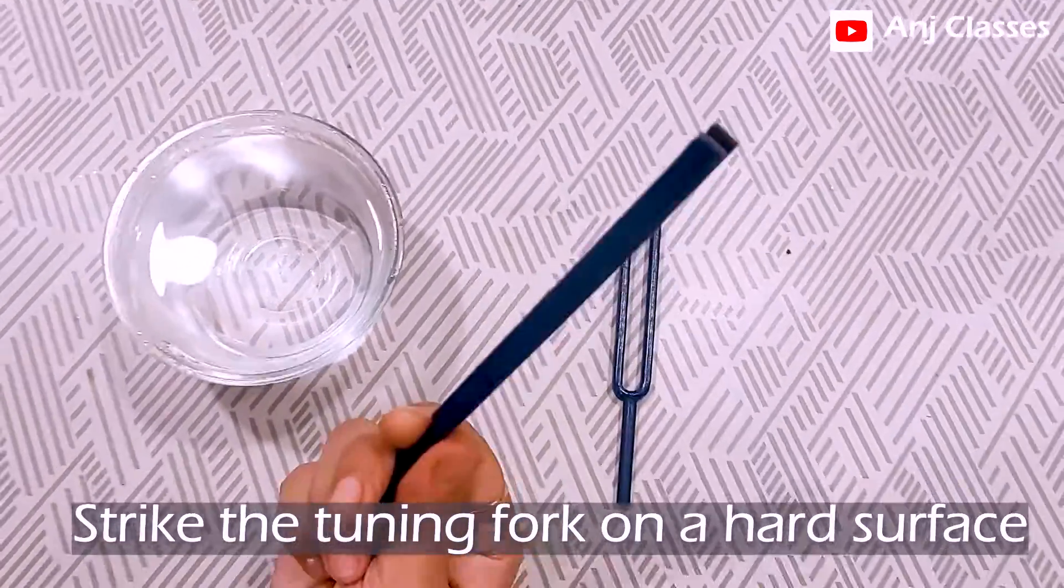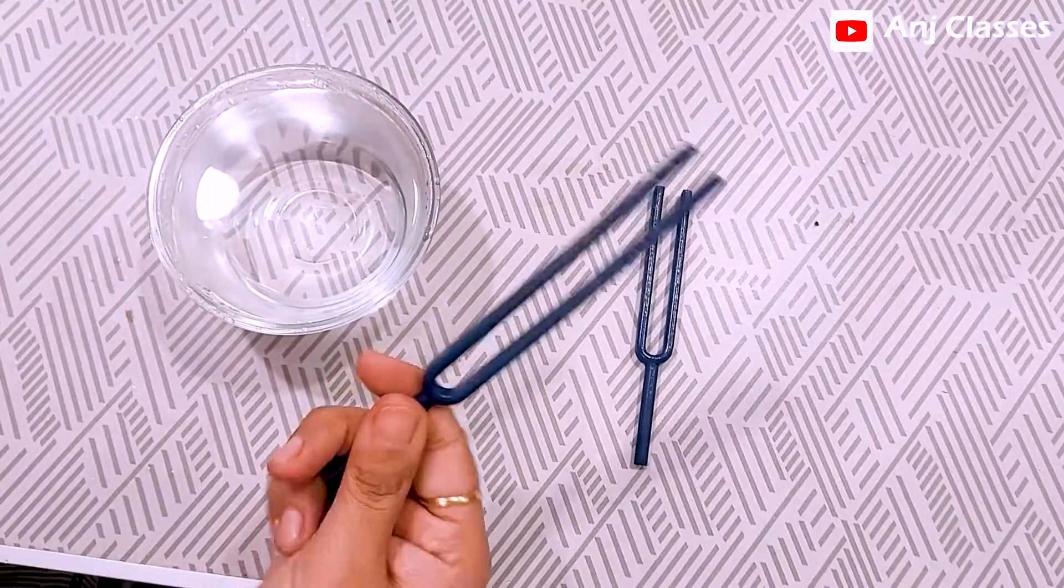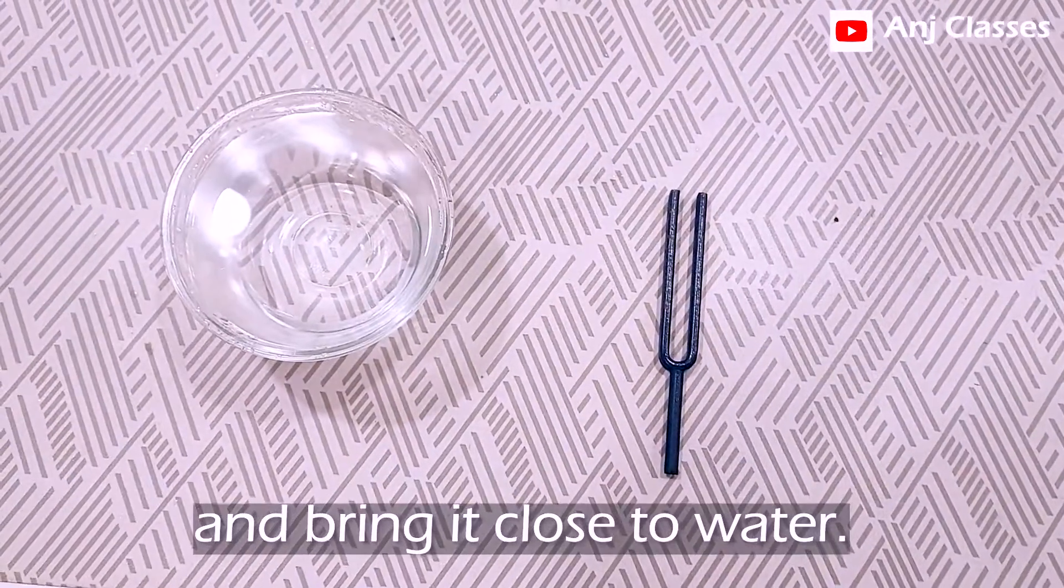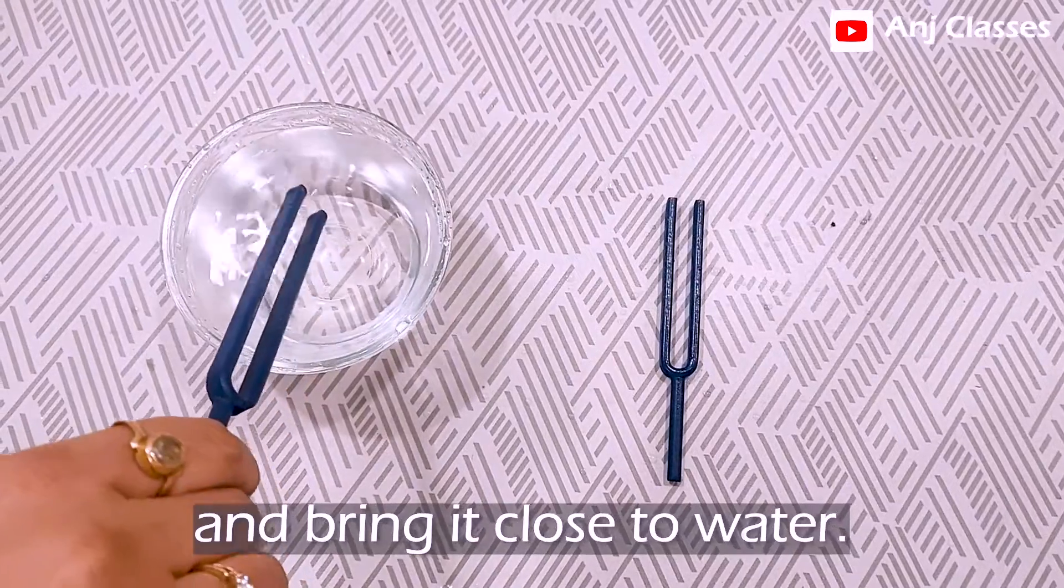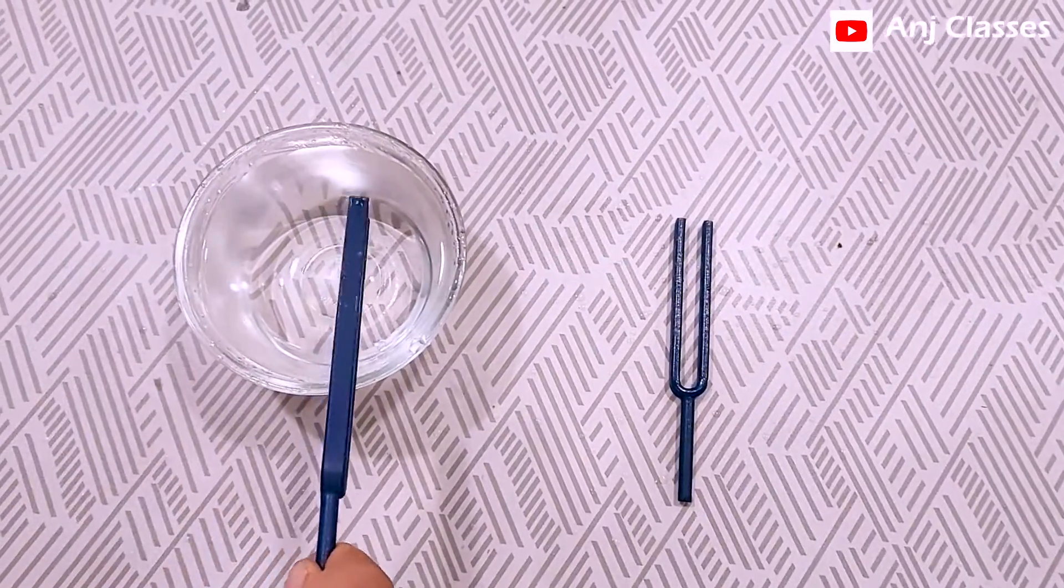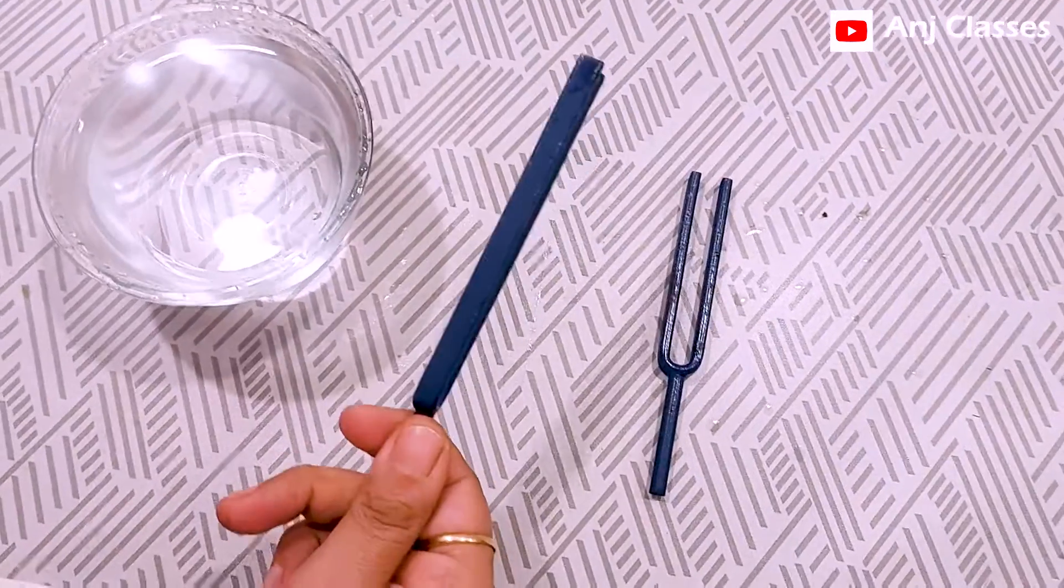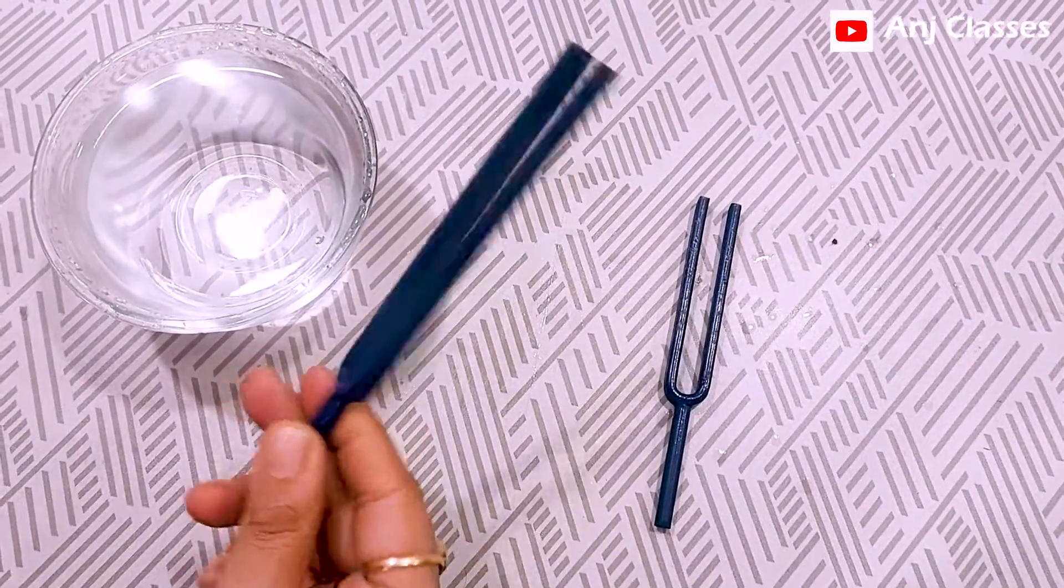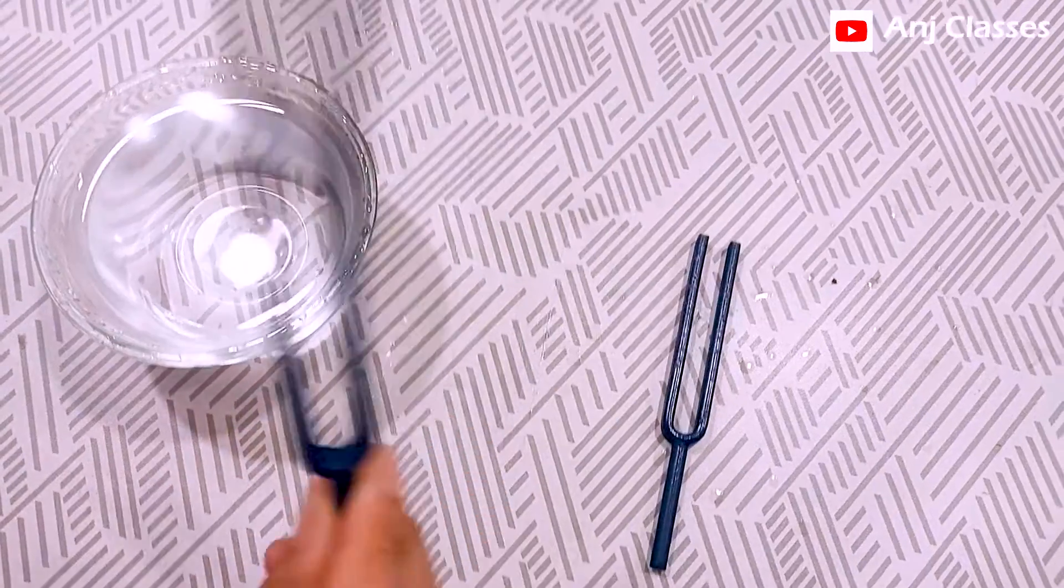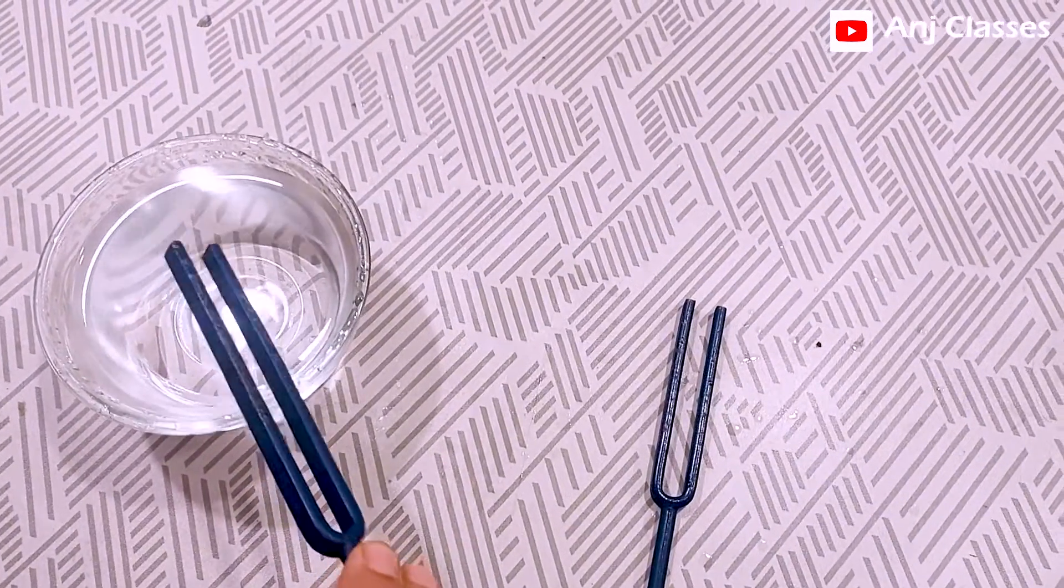Wow! You can see water spills out. Now you know why water spilled out from the bowl - because the tuning fork's energy is transferred to the water, causing the water to start vibrating and splashing out.